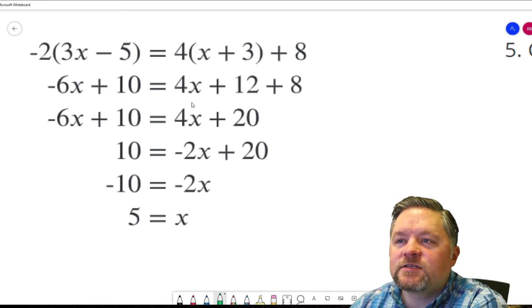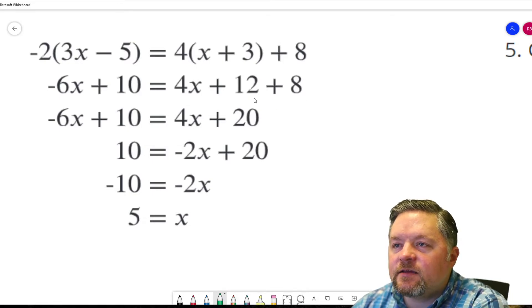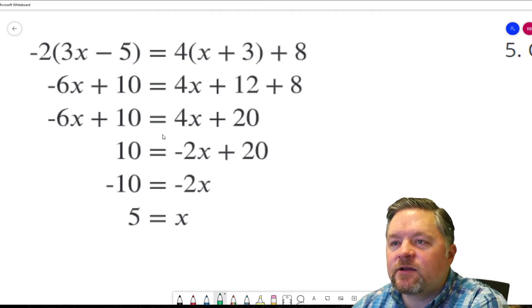Now, negative 6x plus 10 stayed the same. 4x plus 12, plus 8. 8 plus 12 is 20. I agree with that step.